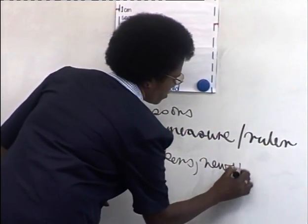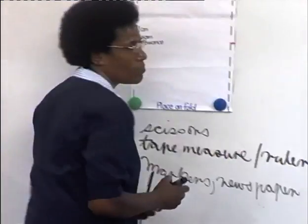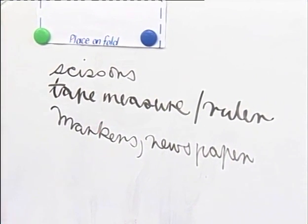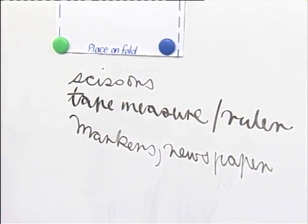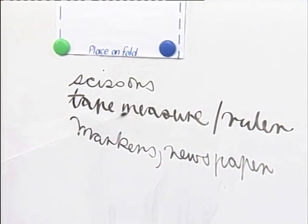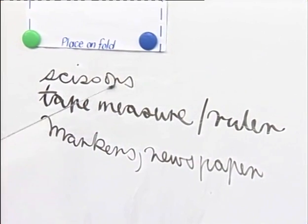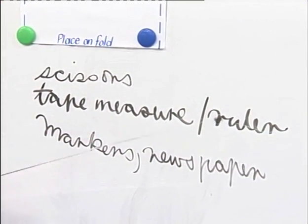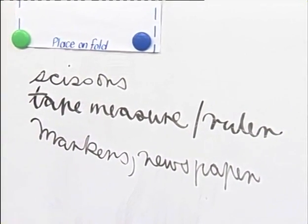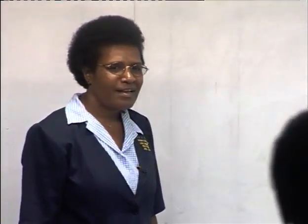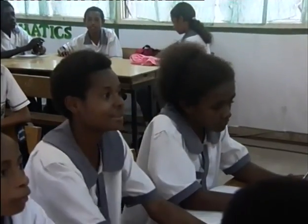Newspaper. So these are all the things that we used for drafting and cutting out the pillowcase pattern. Now, from this, which ones are the actual sewing equipment? Scissors and tape measure. We can also say ruler. Where we don't have tape measure, we can always use rulers.